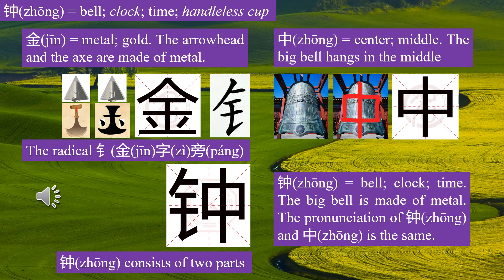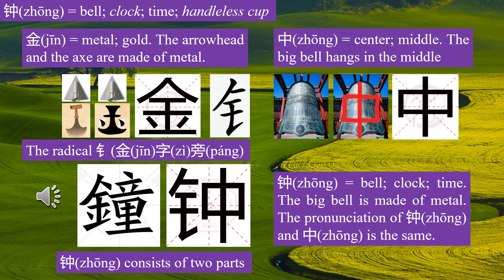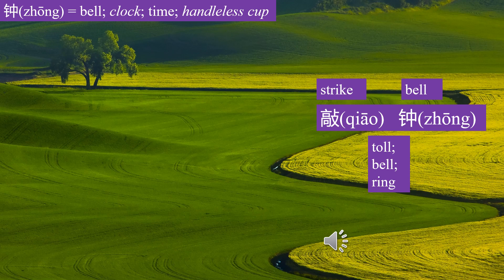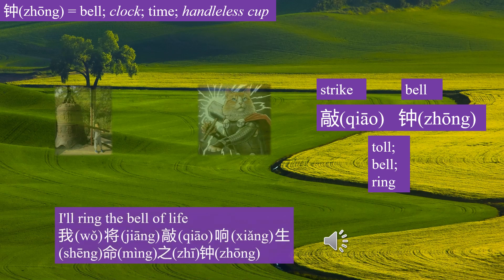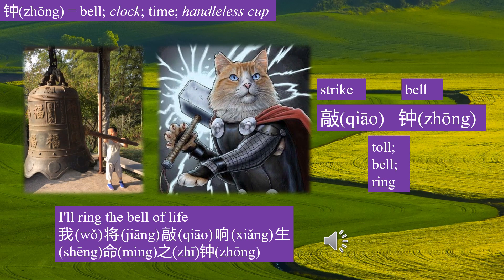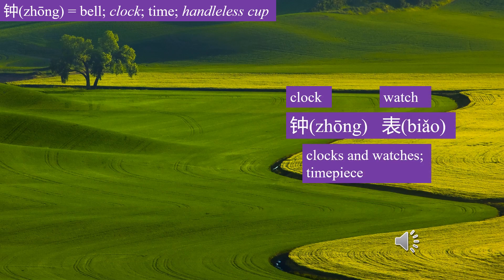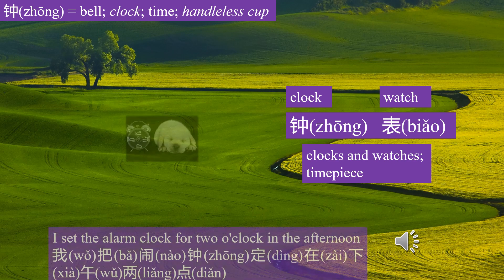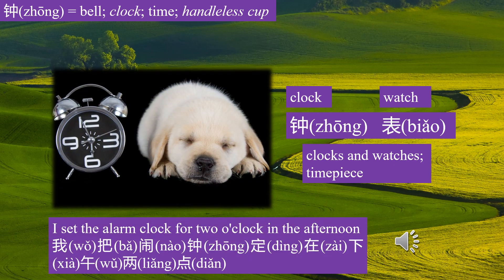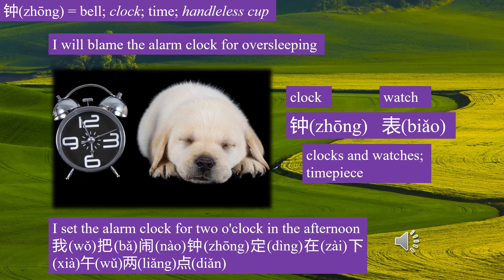The pronunciation of Zhong and Zhong is the same. This is the original complex form of Zhong. Jiaozhong means bell. I'll ring the bell of life. Wo jiang jiao xiang sheng ming zhi zhong. Zhong biao means clocks and watches. I set the alarm clock for two o'clock in the afternoon. Wo ba naozhong ding zhi zhaya wu liang diyan. I will blame the alarm clock for oversleeping.